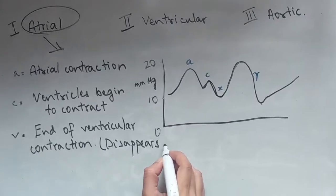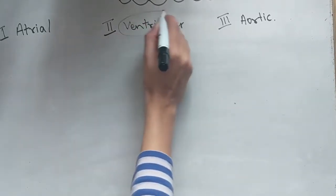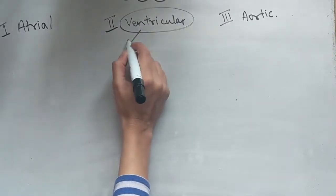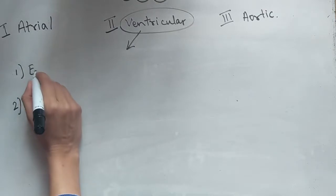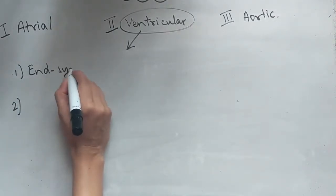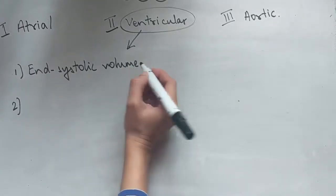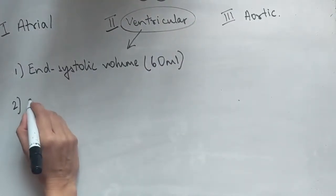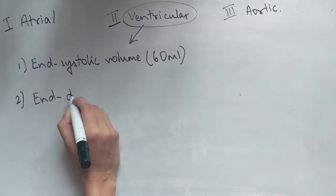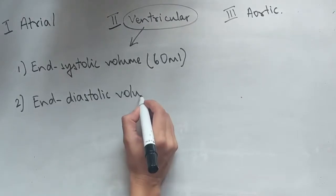Now we will move to the ventricular pressure curves and you need to remember two things about this. You need to remember the end systolic volume and the end diastolic volume which you might be asked in the exam. So the former is sixty milliliters and for the diastolic you've got a hundred and thirty milliliters of blood.